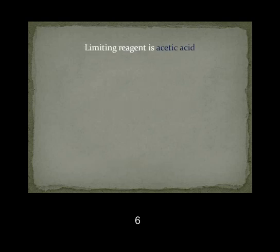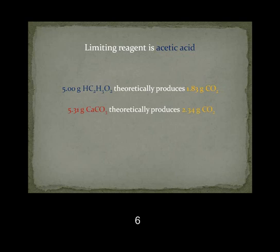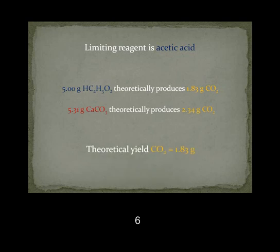By evaluating the two calculations previously completed, we know that the limiting reagent in this reaction is acetic acid, because 5.00 grams of acetic acid only theoretically produces 1.83 grams of carbon dioxide, while 5.31 grams of calcium carbonate theoretically produces 2.34 grams of carbon dioxide. Therefore, the theoretical yield of carbon dioxide for this reaction is 1.83 grams, because by the time 1.83 grams of carbon dioxide are produced, the acetic acid is used up and the reaction stops.